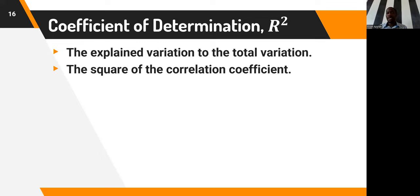The Spearman's correlation coefficient is a non-parametric statistic which can be used when data have violated parametric assumptions, especially when data are not normally distributed.